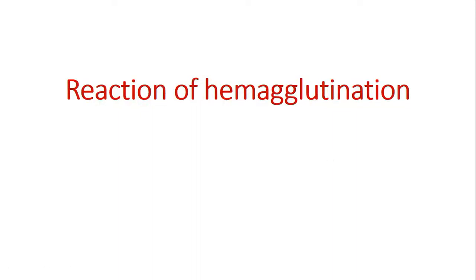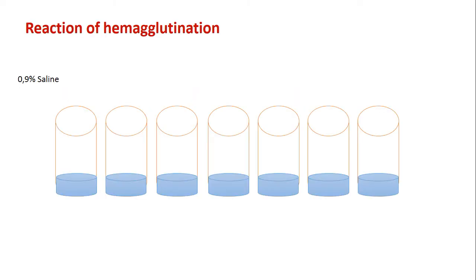Reaction of hemagglutination. Hemagglutination serves as a convenient method for detection and assay of the influenza virus. For this reaction, we use test tubes or special plastic trays. We add 0.9% physiological solution into all test holes.